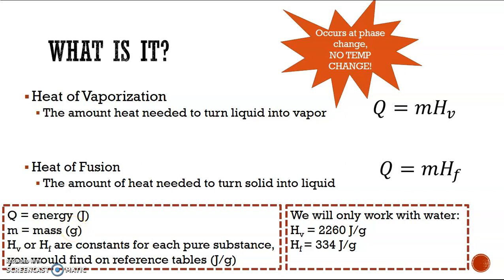Then the Hv or Hf, these are heat of vaporization for Hv and heat of fusion for Hf. These are constants for every different substance. Each substance has its own unique heat of vaporization or heat of fusion, depending on what it is. Just like every substance has its own specific heat, every substance has its own heat of vaporization and heat of fusion.